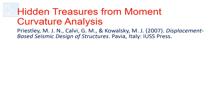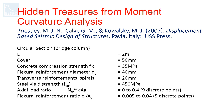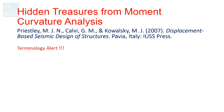Now let's dig into the moment-curvature analysis and find out hidden treasures from it. A number of analyses were performed for various sections and numerical results were verified experimentally. For illustration purposes, the circular section is discussed, though this is applicable to rectangular sections as well. The results are expressed in terms of dimensionless quantities. The dimensionless nominal moment capacity is defined as the ratio of nominal moment capacity to the concrete compressive strength times the cube of the sectional diameter. The dimensionless yield curvature is defined as the ratio of yield curvature times the sectional diameter to the yield strain of the reinforcing steel.